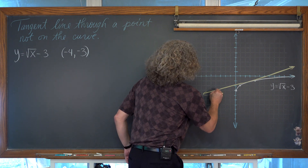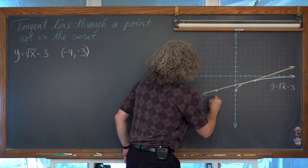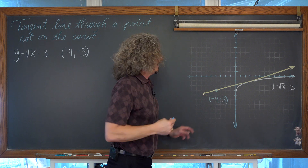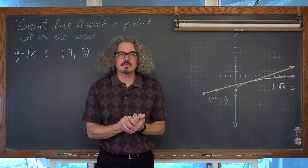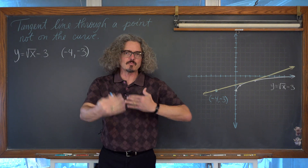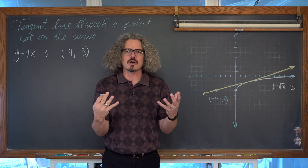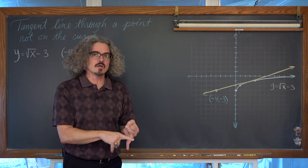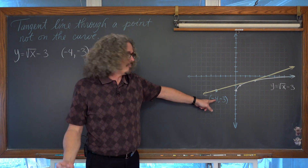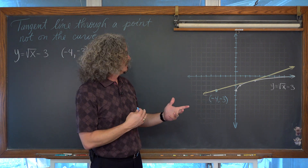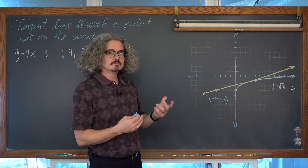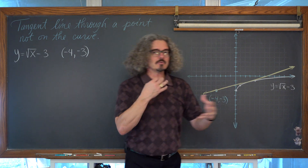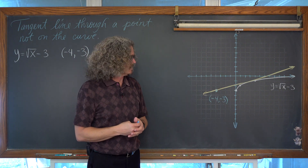I am going to grab blue. We are trying to find the equation of this tangent line going through (-4, -3), and we need to ask ourselves what do we need to write the equation of a line. That is what this boils back to — our prior knowledge, what we have learned before calculus. Well, you need a point and a slope. We have a point that the line goes through, so really all we need is the slope of this line and we will be able to write the equation of that tangent line.